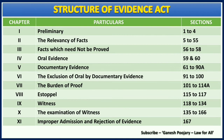Chapter 1 is on preliminary aspects, covering from section 1 to 4. Chapter 2 covers the relevancy of facts, starting from section 5 to 55, which is one of the lengthiest chapters in this act. Chapter 3 discusses facts which need not to be proved, covering section 56 to 58. Chapter 4 has two sections on oral evidence: section 59 and 60. Chapter 5 is on documentary evidence, covering section 61 to 98. Chapter 7 discusses burden of proof, covering section 101 to 114A.